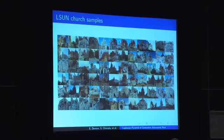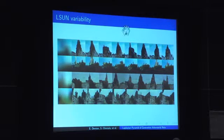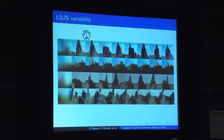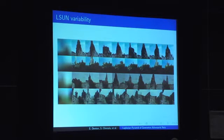Another thing we can do with our model is probe what kinds of variability the model has learned. To test this, we sampled a single low-resolution image from our coarsest model and conditioned the generation process on that image. The leftmost column shows that fixed low-resolution image, and all subsequent columns show different samples from the model — different random noise vectors are injected to get different high-resolution images all consistent with this low-resolution input. Interestingly, the network has learned all sorts of different structures about towers and churches. If our model were simply learning a lookup table, you would see very slight variance of the original image, but we do in fact see towers being added and removed in different variants of semi-realistic church images.